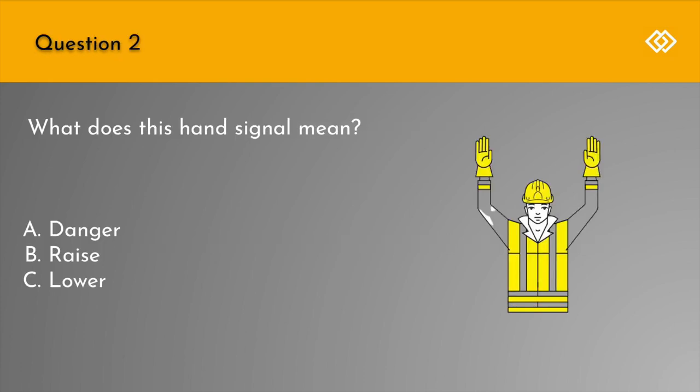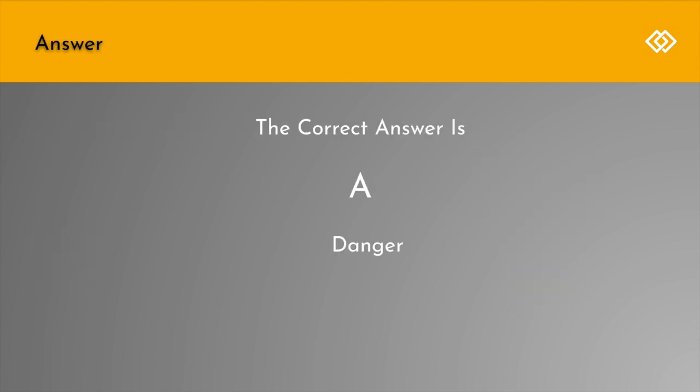Question 2. What does this hand signal mean? A. Danger. B. Raise. C. Lower. The correct answer is A: Danger.